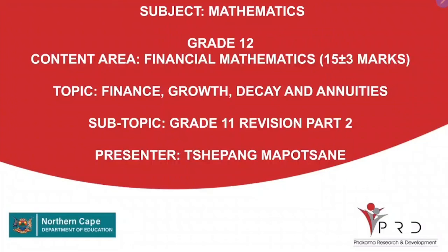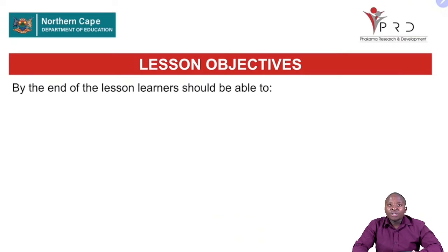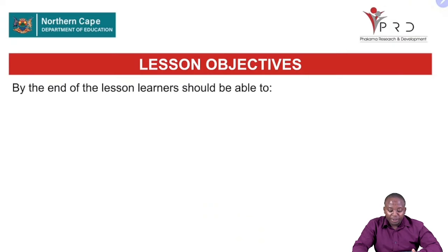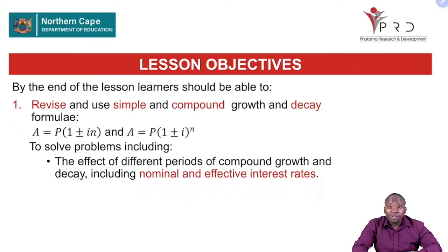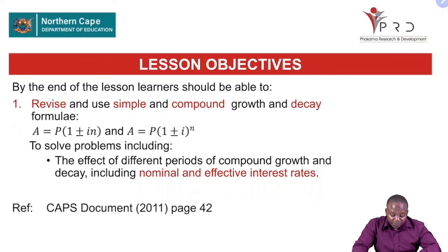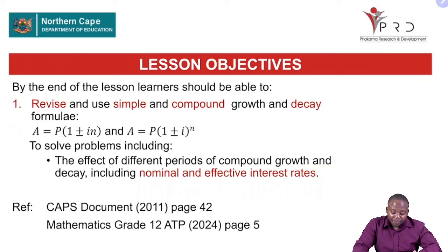The sub-topic is a grade 11 revision, part 2. The lesson objective: by the end of this lesson, you must be able to revise and use the simple and compound decay formula — A equals P plus-minus IN, and A equals P(1 plus-minus i) raised to the power n. We'll utilize these formulas to solve problems that include different periods of compound growth and decay, including nominal and effective interest rates. This information is extracted from the CAF document, page 42, and also found in our grade 12 HGP 2024 on page 5.